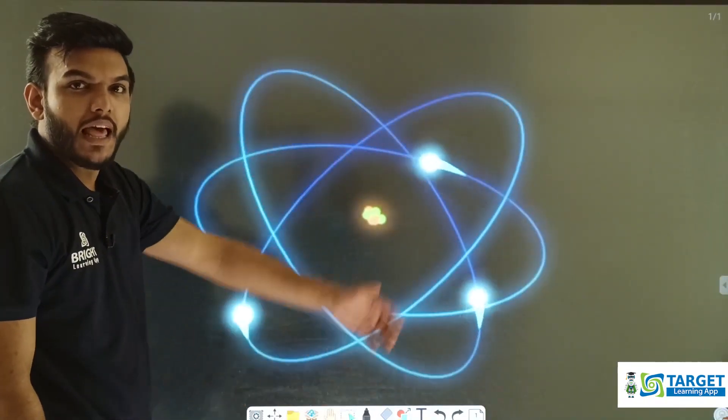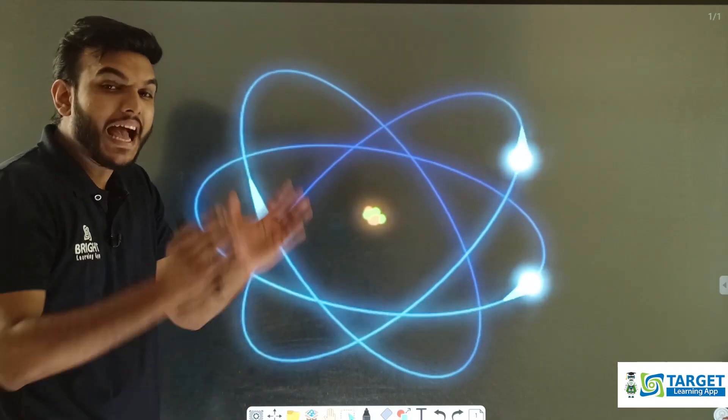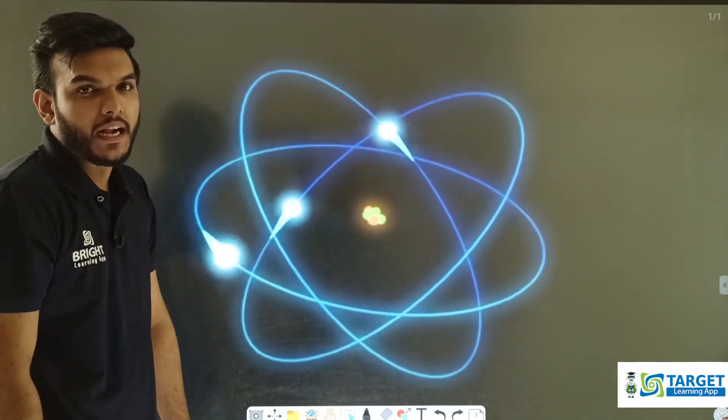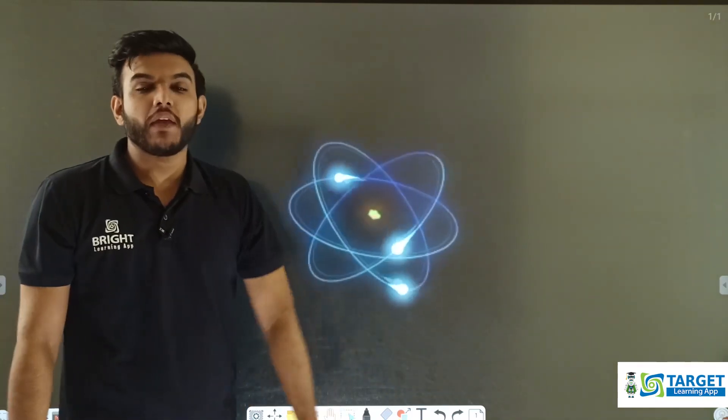The atom resembles the Earth revolving around the Sun - that is the actual representation and structure of an atom.